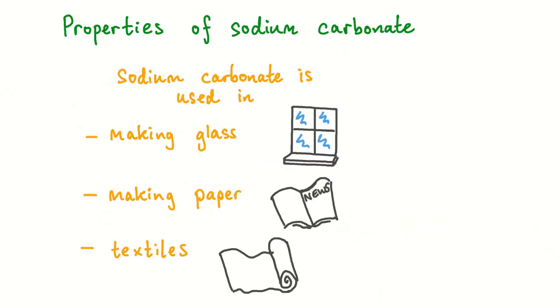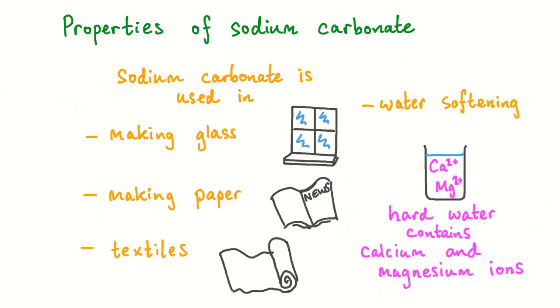Industrially, sodium carbonate is important in making glass, paper and textiles. Sodium carbonate can also be used to soften hard water that contains dissolved calcium and magnesium ions. These ions react with the sodium carbonate to form insoluble carbonates that can be filtered out.